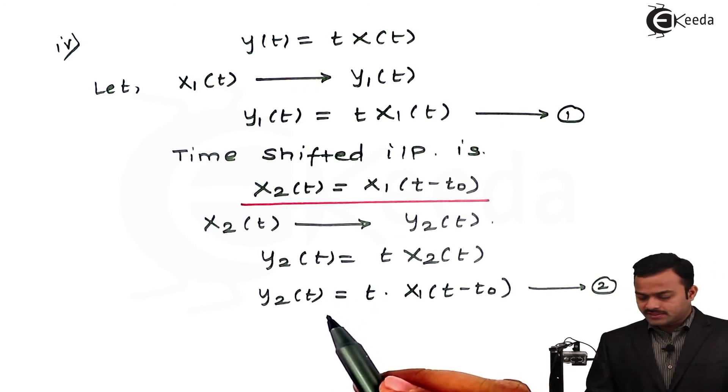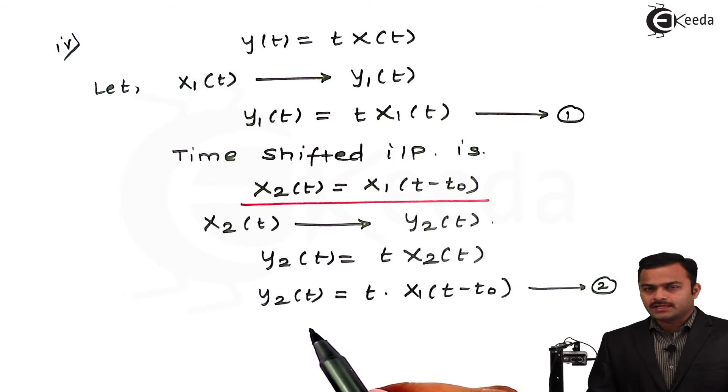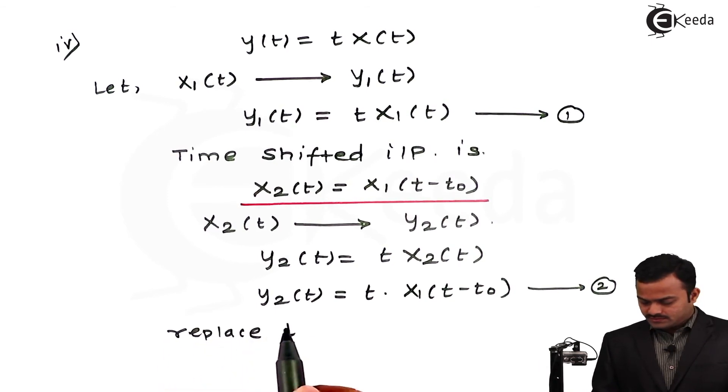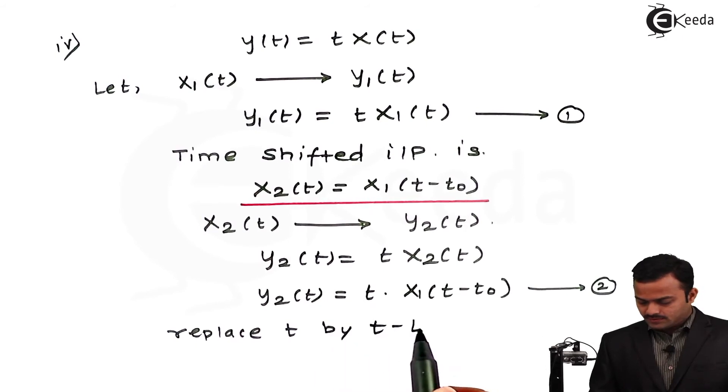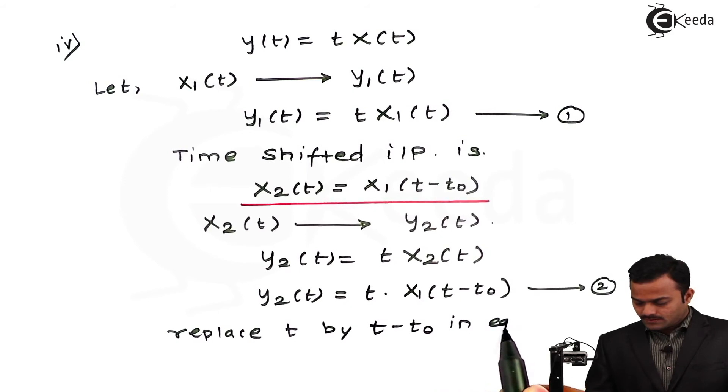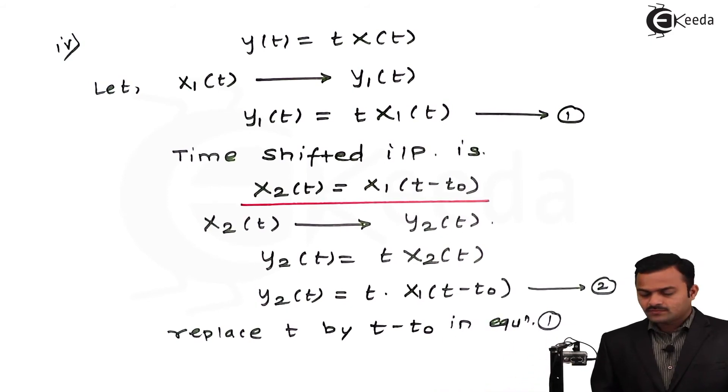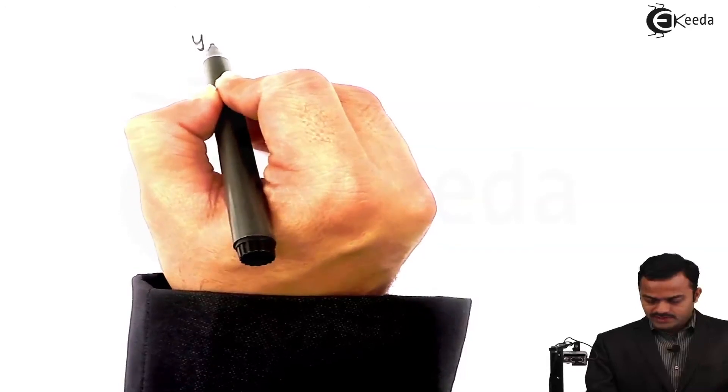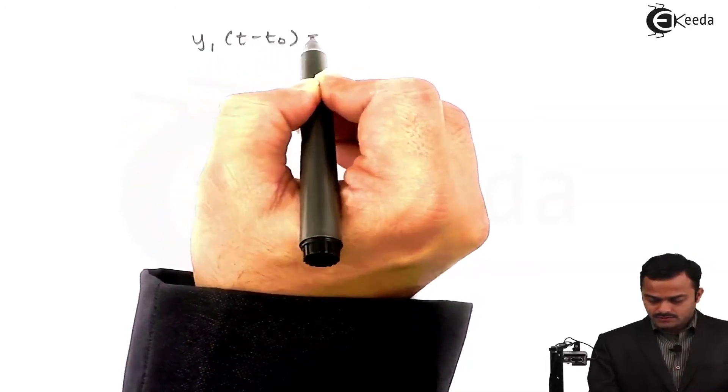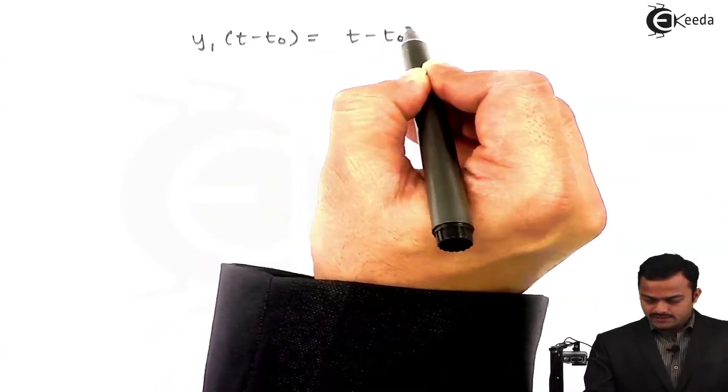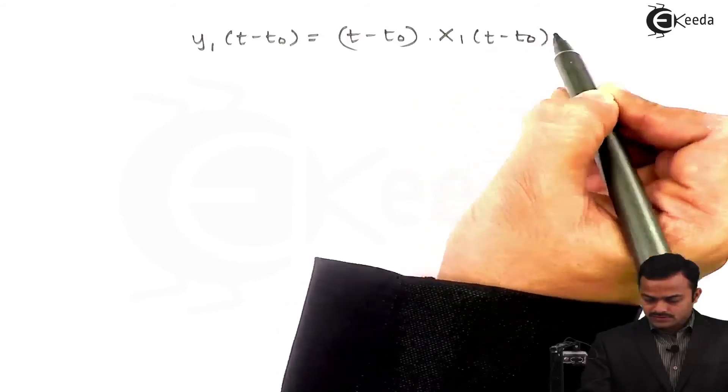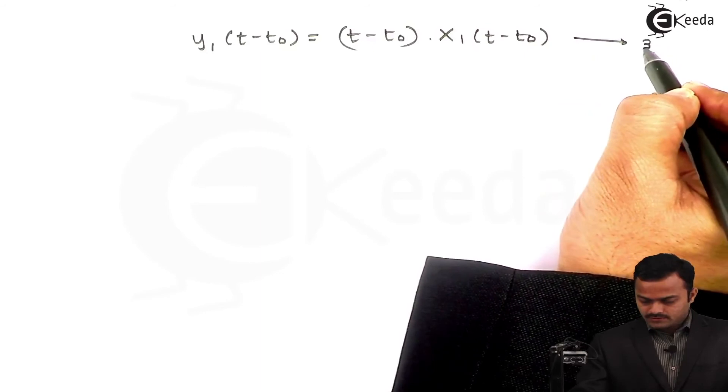Now, we need to check whether this is equal to an expression which we obtain by replacing t with t - t₀. So replace t by t - t₀ in equation number 1. If I do it, I will get new expression as y₁(t - t₀) = (t - t₀)·x₁(t - t₀). This is equation number 3.